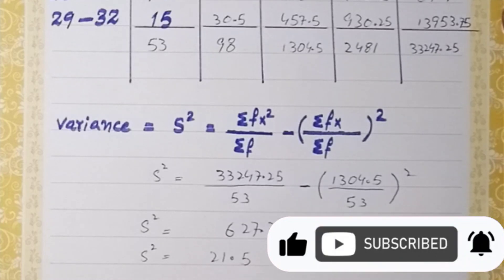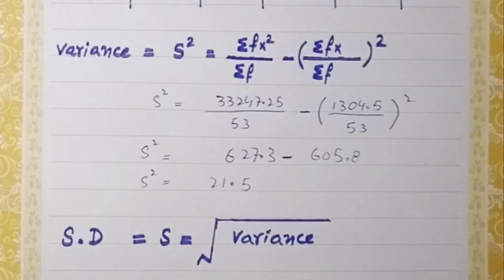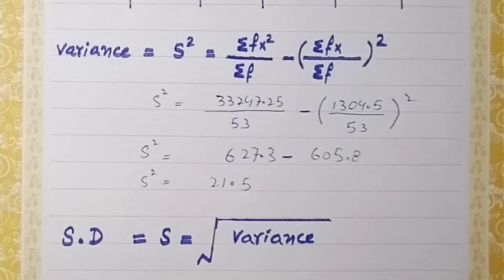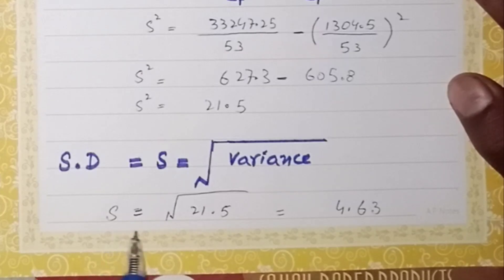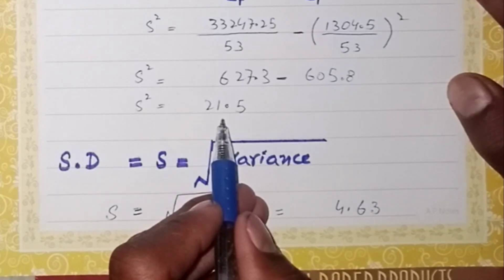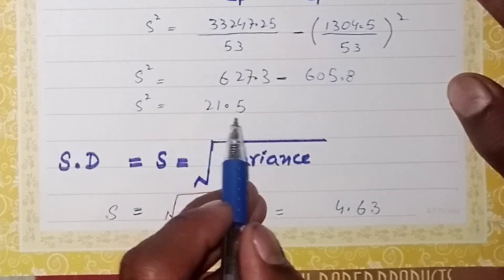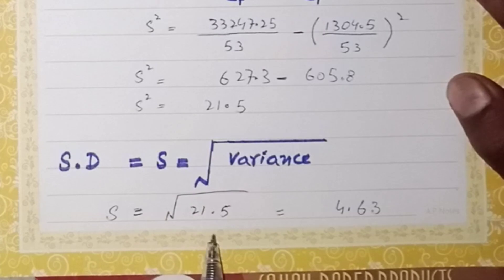After that, we calculate the standard deviation for this grouped data. The standard deviation is simply the square root of the variance value. Since the variance is 21.5, we take the square root and the standard deviation is equal to 4.63.